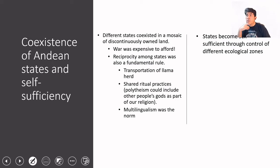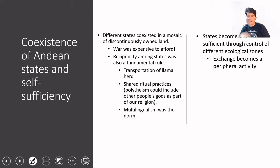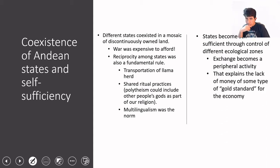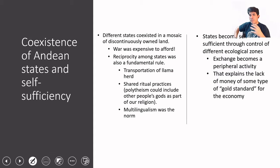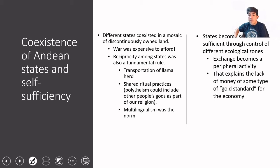So if states become self-sufficient through control of different ecological zones, exchange in this view of Andean economy becomes a peripheral activity — it's less important. We know that people did trade, and bartering is still very much present in everyday life in the Andes. However, the lack of intense trade among communities or at a state level — where goods would need a particular value to allow extended trade across boundaries — explains very well why there was no money in Andean civilizations. Trading effectively seems to be less important than self-sufficiency of these Andean states.